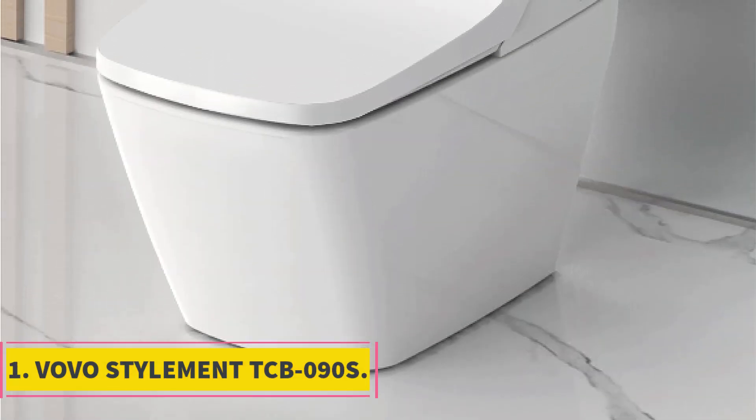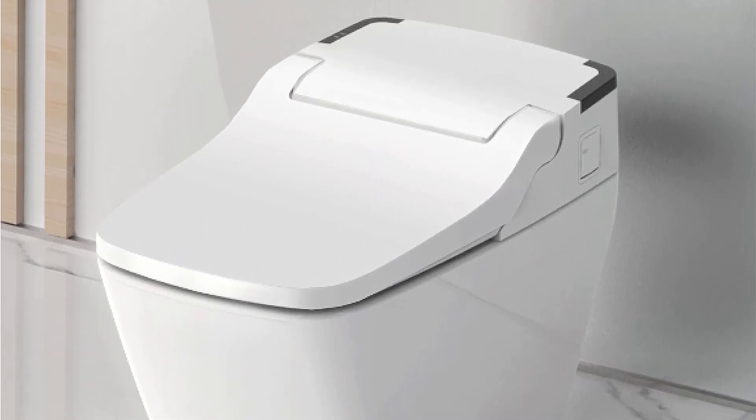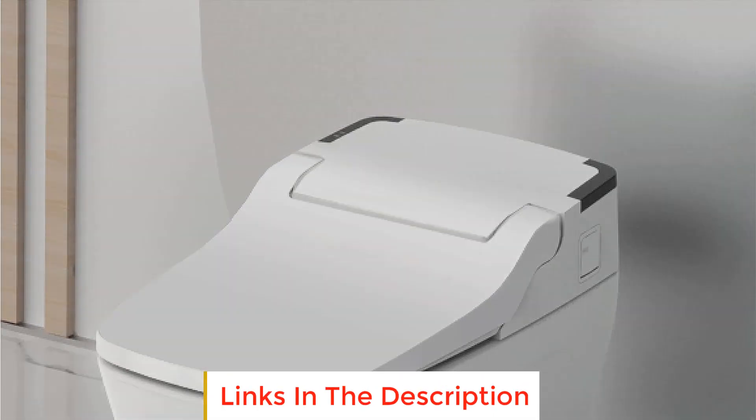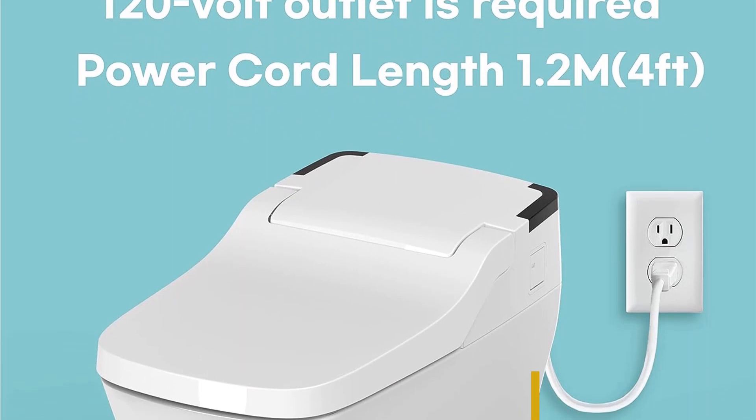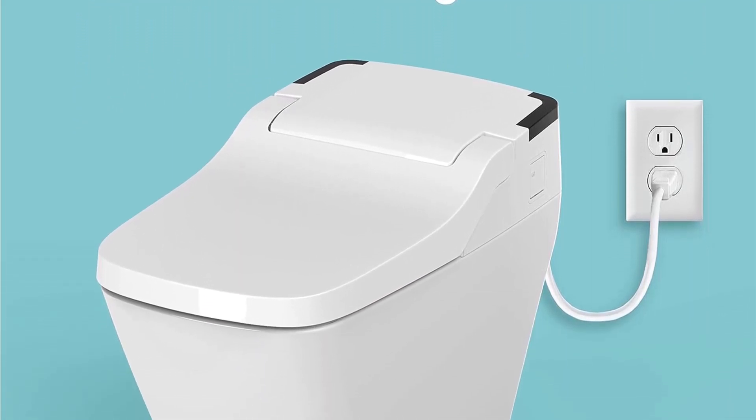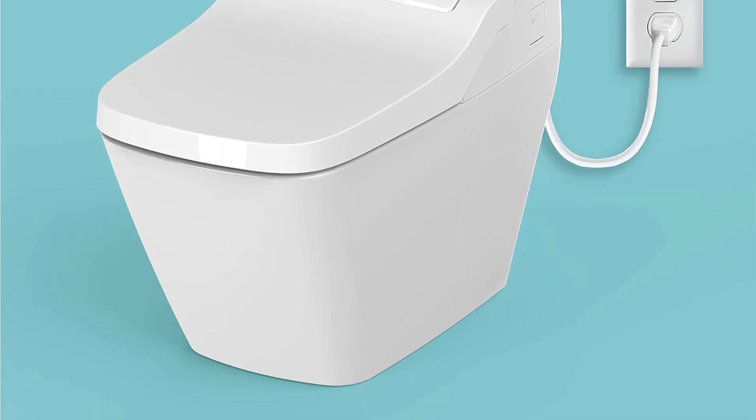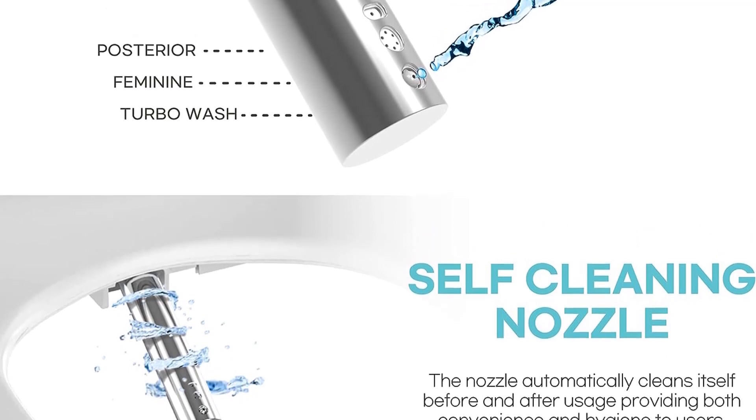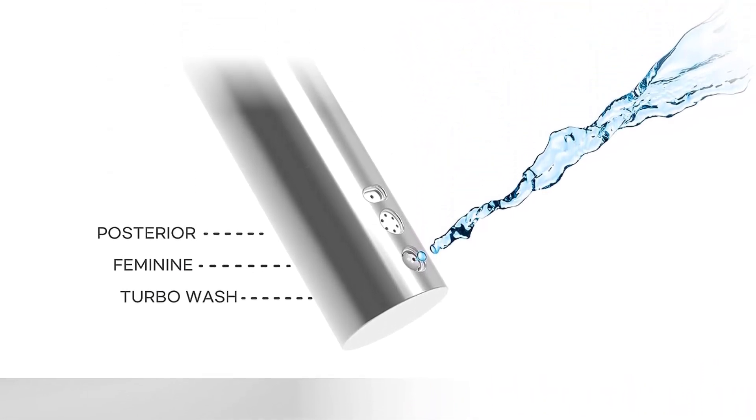Number 1. Vovostylement TCBO90S. The Vovostylement TCBO90S is a cutting-edge smart toilet that offers a range of advanced features designed to provide convenience, hygiene, and eco-friendliness. This high-tech toilet incorporates innovative technologies to enhance the user experience and reduce environmental impact.